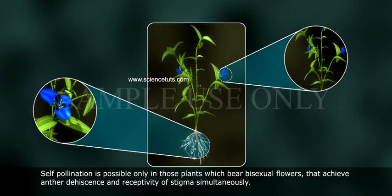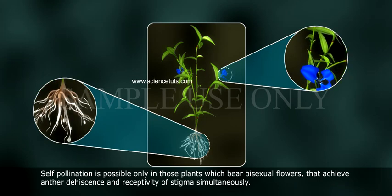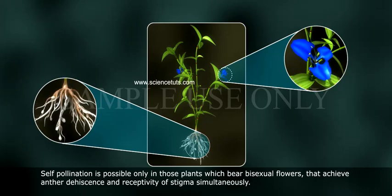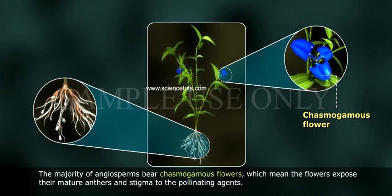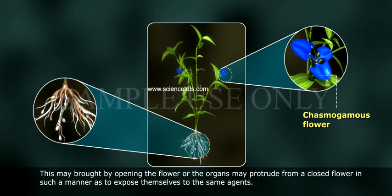Self-pollination is possible only in plants which bear bisexual flowers that achieve anther dehiscence and receptivity of stigma simultaneously. The majority of angiosperms bear chasmogamous flowers, which means the flowers expose their mature anthers and stigma to the pollinating agents. This may occur by opening of the flower, or the organs may protrude from a closed flower to expose themselves to those agents.